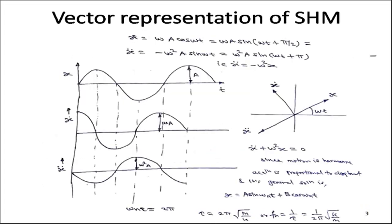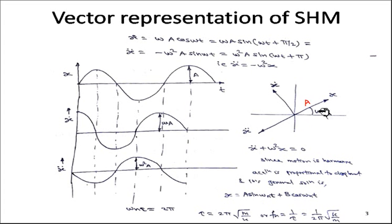To express displacement, velocity, and acceleration as vectors: displacement x = A sin(ωt) is a vector of magnitude A at angle ωt. Velocity ẋ = Aω cos(ωt) can be written as Aω sin(ωt + π/2), meaning the velocity vector has magnitude Aω and leads displacement by 90 degrees (π/2).